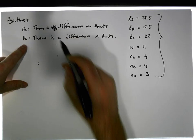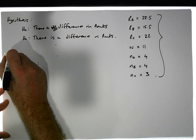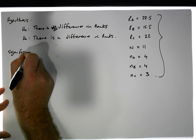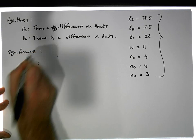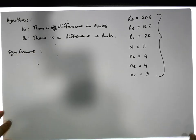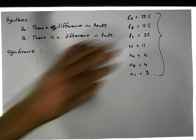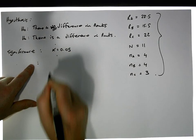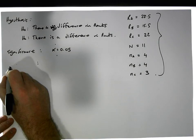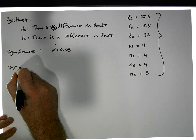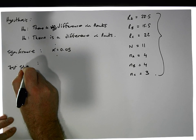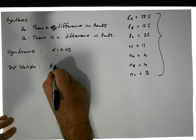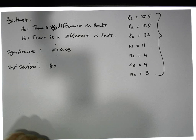The significance level — the probability of committing a type one error, that is incorrectly rejecting the null hypothesis when we shouldn't have — is alpha = 0.05. The test statistic is H, equal to the following formula.